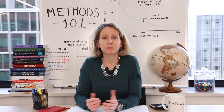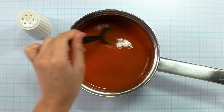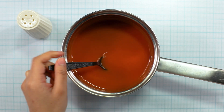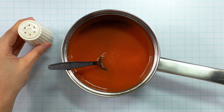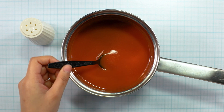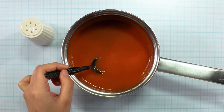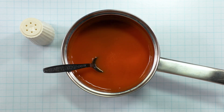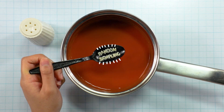We actually use random sampling all the time in everyday life. For example, when you're making soup, if you stir the pot correctly, you don't have to drink the entire pot of soup to know if it needs more salt. Instead, you can just have a spoonful, because each spoonful tastes like the pot of soup overall. That's random sampling.